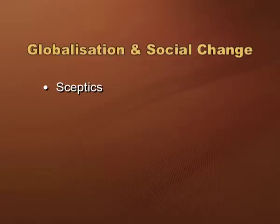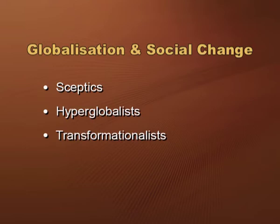To answer these questions, let us look at the three categories of theorists as discussed by David Held and others. These three categories are: the skeptics, the hyperglobalists, and the transformationalists. Each of these three categories summarizes the views held by various theorists regarding globalization, its causes and consequences. Let us discuss these three categories one by one, beginning with the hyperglobalists.